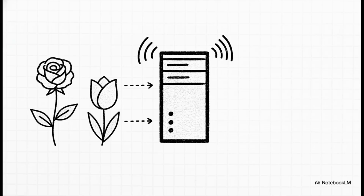A developer over at our flower shop sets up their server. They load it up with all their products — roses, tulips, the whole shebang. Then they switch it on so it's live and ready to listen for any requests that might come in from an AI agent.